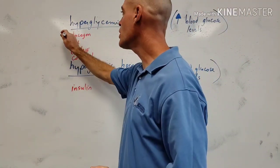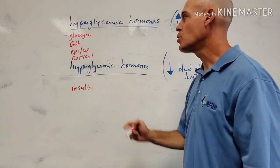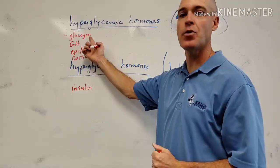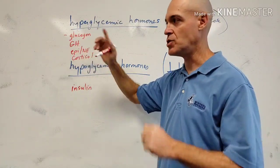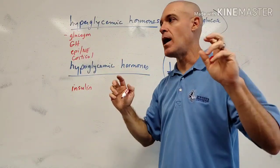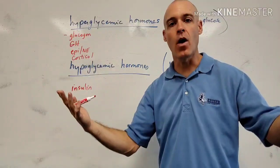We've got glucagon being really the most specific one. Glucagon comes from the pancreas, from the alpha cell of the pancreas, which is considered an islet of Langerhans or pancreatic islet cell, whatever you want to call it.